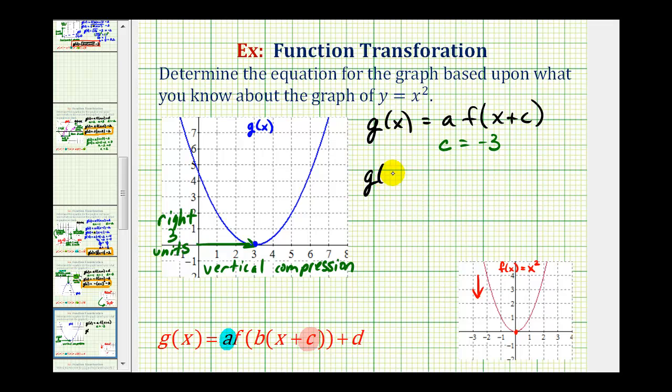Which means g of x is equal to a times f of the quantity, x minus three. And because f of x is equal to x squared, we can write this as g of x equals a times the quantity, x minus three squared.